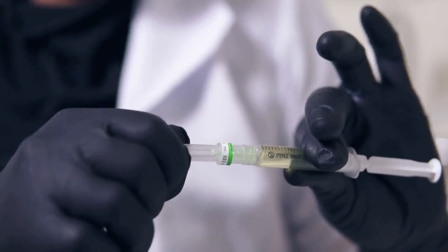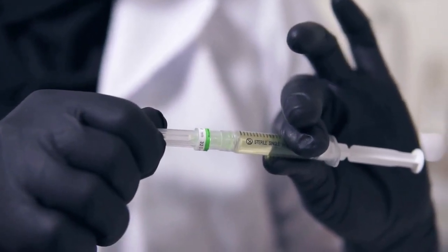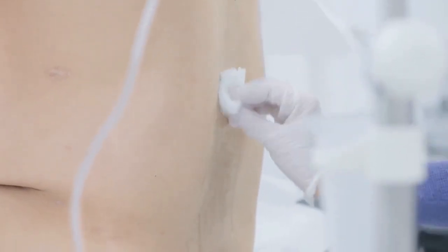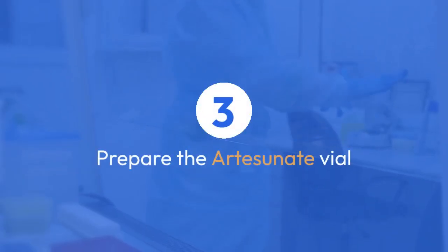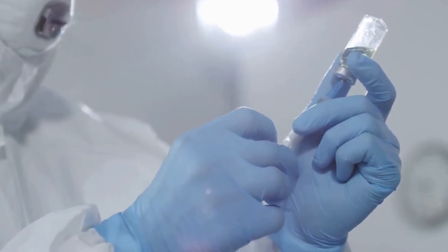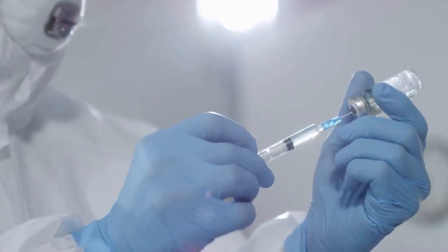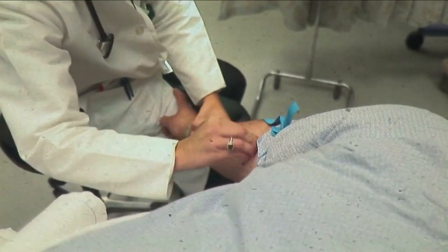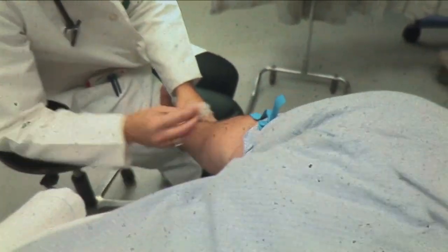Step 2: Prepare the injection site. Clean the area where you'll be injecting the artesanate with an alcohol swab and let it dry completely. Step 3: Prepare the artesanate vial. Carefully inspect the vial for any damage, discoloration, or particulate matter. If anything seems amiss, do not use it. Clean the top of the vial with an alcohol swab.